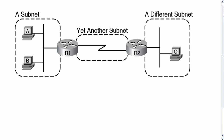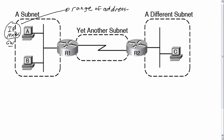A host has an IP address and a mask of course, and it has a default gateway setting most likely, and we're going to assume that it does for this discussion. Armed with those pieces of information, a host takes that IP address and mask and calculates the range of addresses in a subnet. Once it knows that range of addresses in its own subnet, it has two-part routing logic.